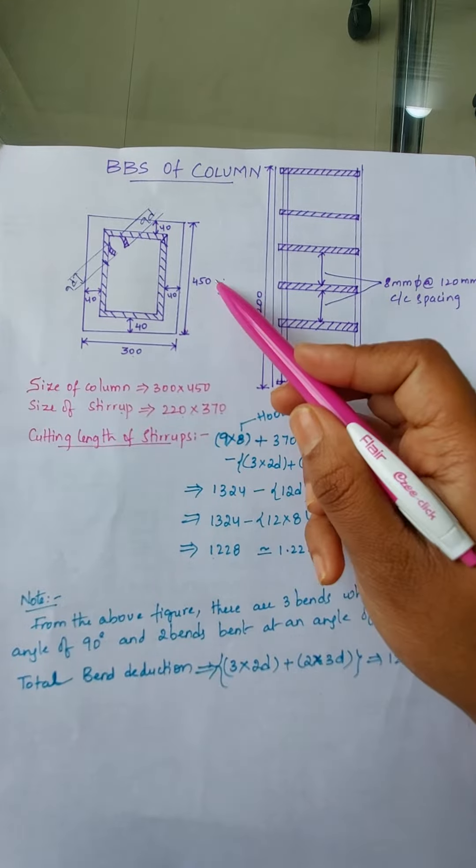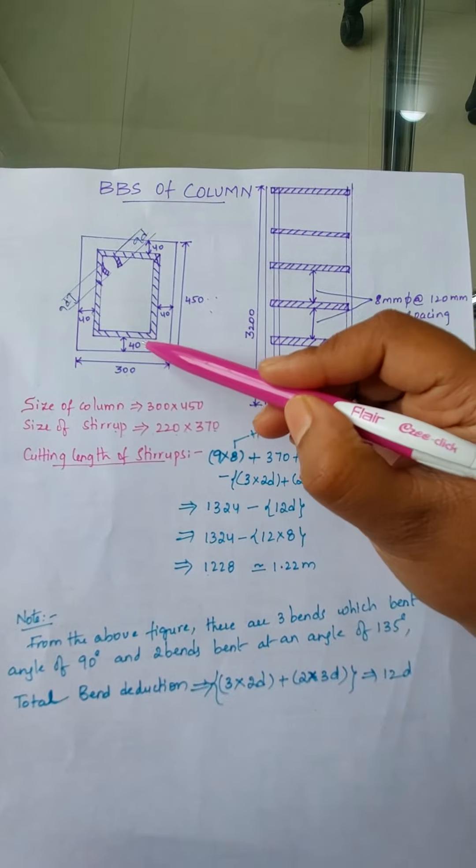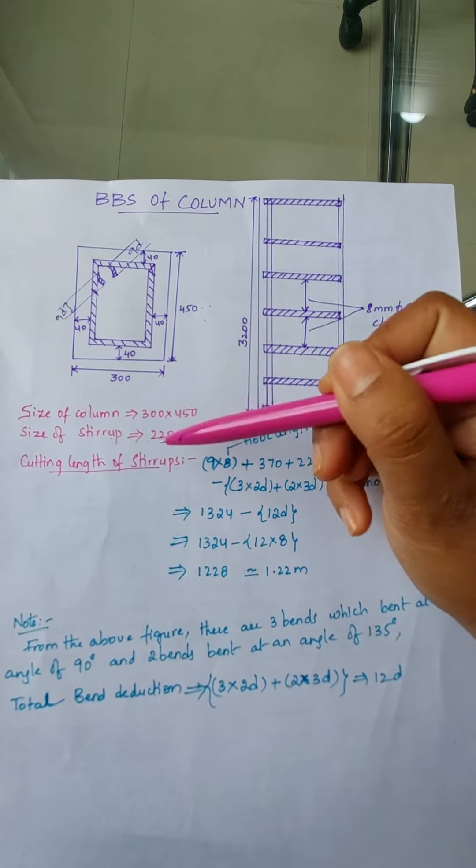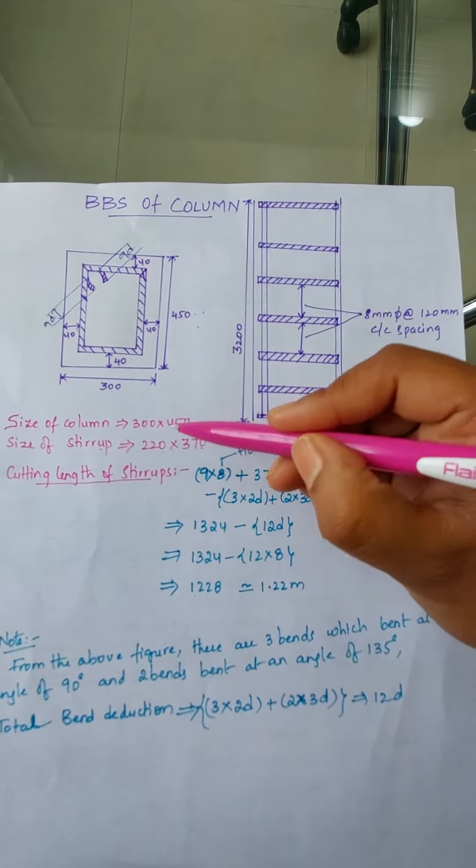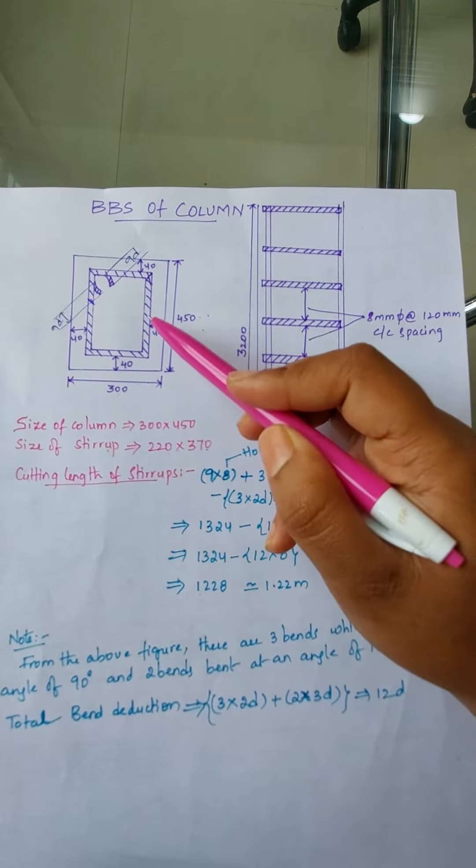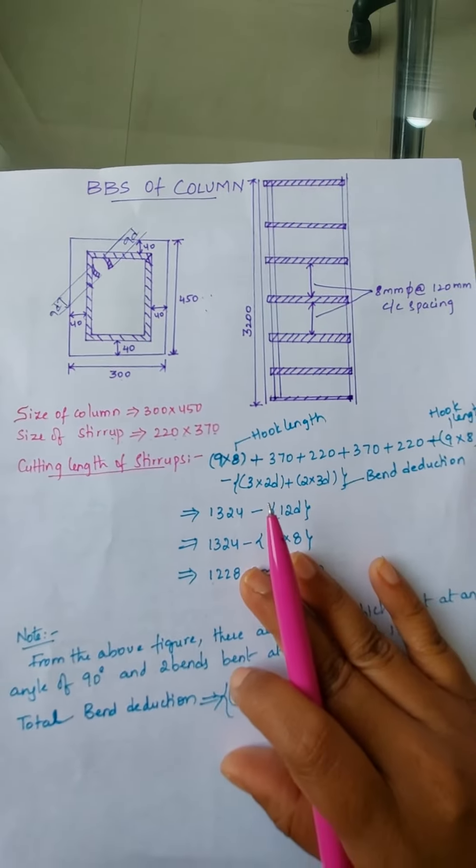The size of stirrup is calculated from 300mm. After removing this clear cover on both sides, from 300 minus 40 minus 40, we'll get 220. And from 450, removing these two sides of clear cover, we'll get 370.